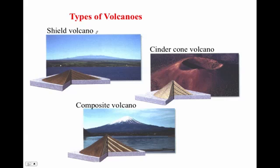Here it is again: here's a shield cone or shield volcano with a nice gentle slope. Here's a cinder cone — much steeper because of the ash — and there's a composite cone.